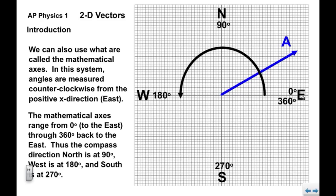You can see that the compass directions we're familiar with. North is 90 degrees, measured counterclockwise from east. West is 180 degrees, again measured counterclockwise. South is 270.